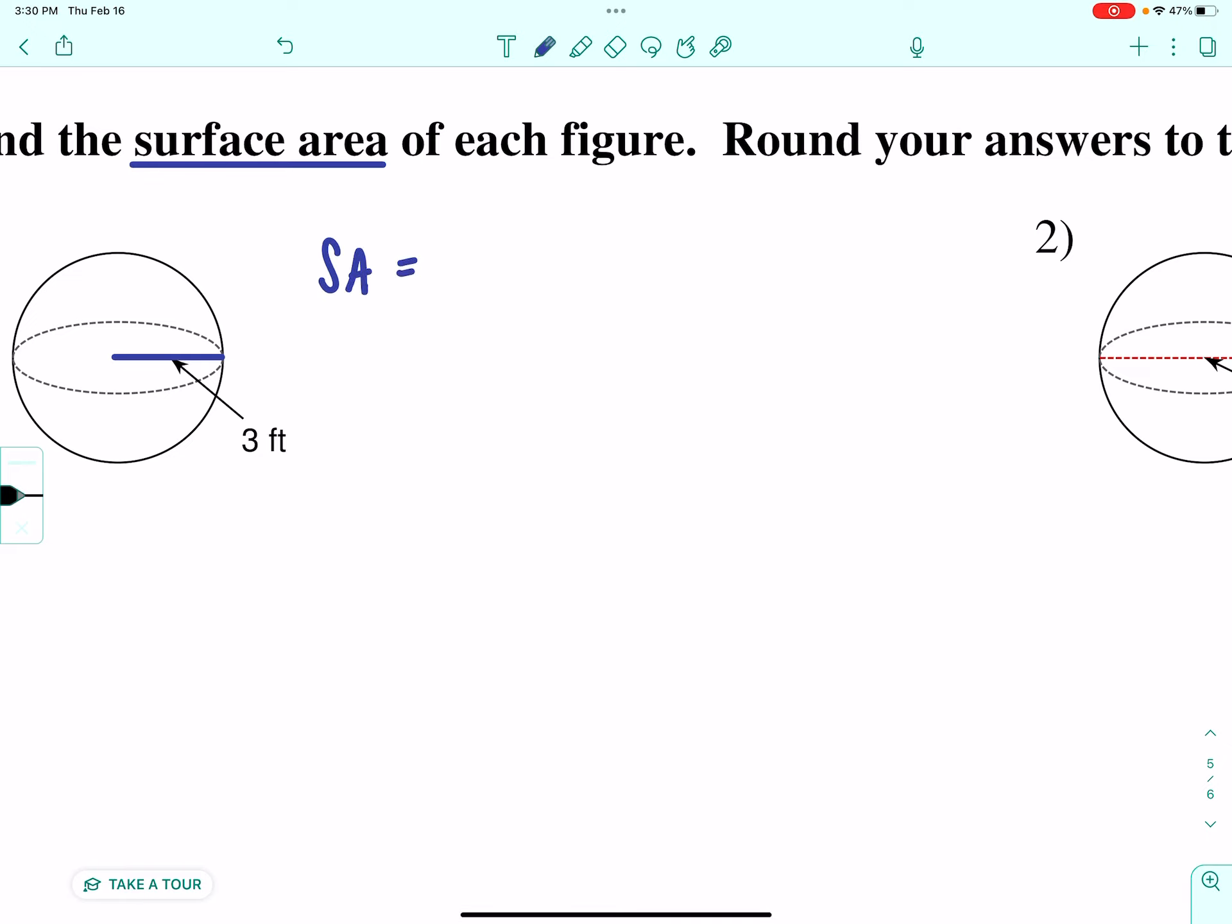I always start by writing the formula. So, the surface area for my sphere was 4 pi r squared. I keep the four. They don't tell us what to use for pi, so we'll go with 3.14. And our radius is three. And we can't forget the squared.